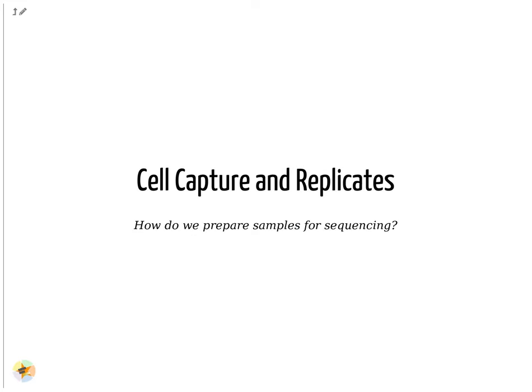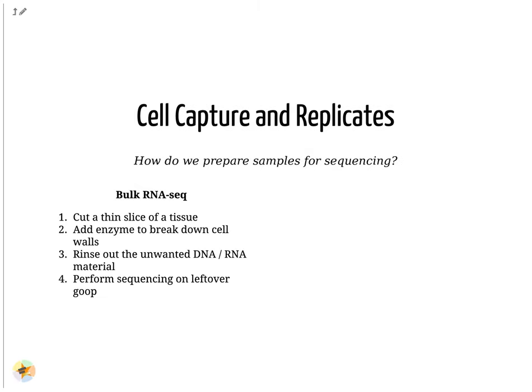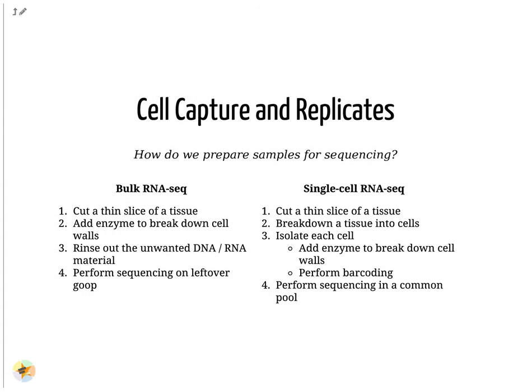For example, how are cells captured and sequenced? In bulk RNA-seq analysis, the process involves taking a sample, removing unwanted molecules and sequencing everything else. For single-cell analysis, the process is much the same, except that each sample is a cell, and must therefore be sequenced separately from other cells.